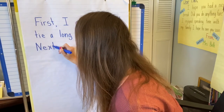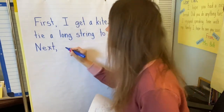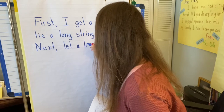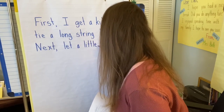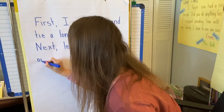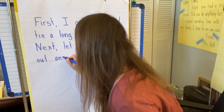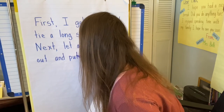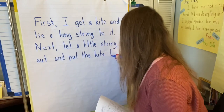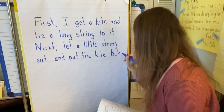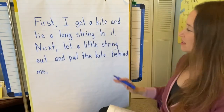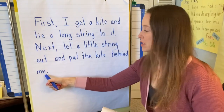Now I'm going to think what do I do next? Next, comma. What do I do next? Next, I let a little string out and put the kite behind me. Period. That's the end of my next step.